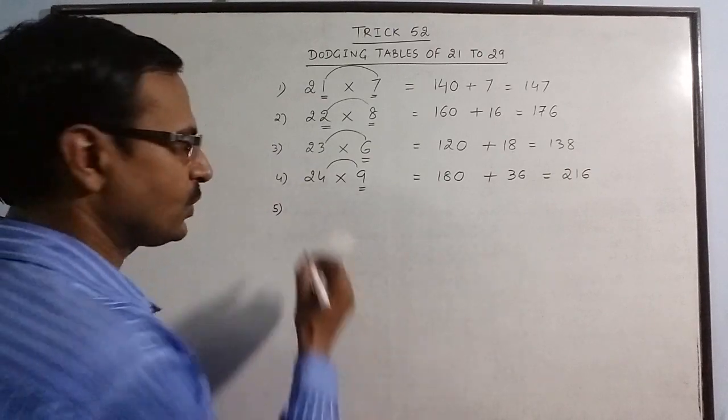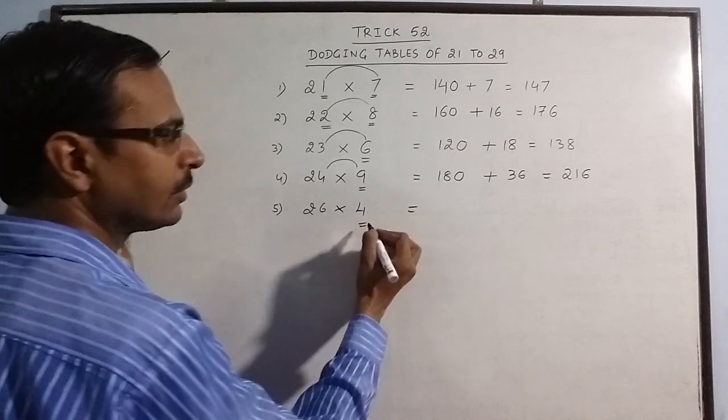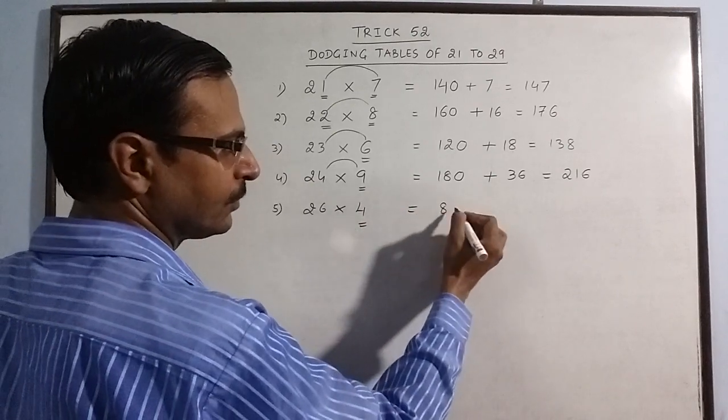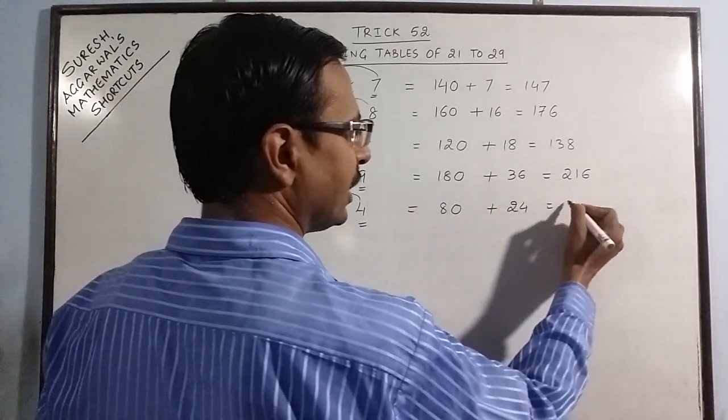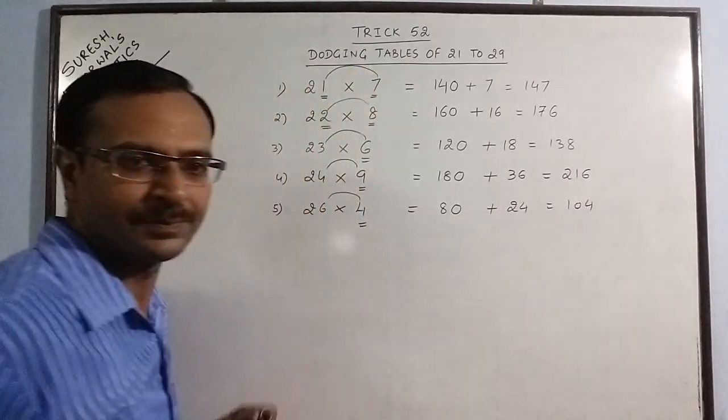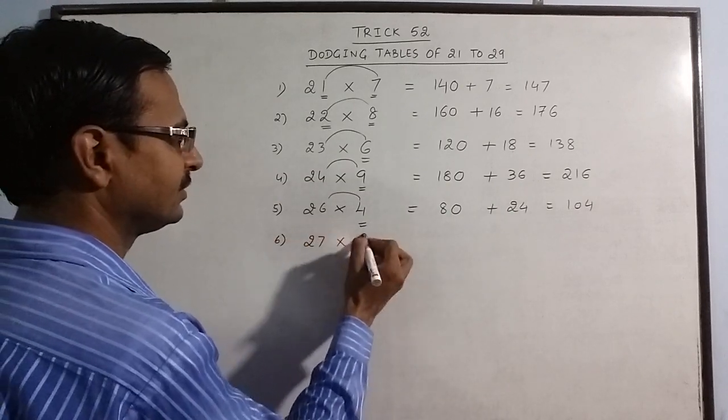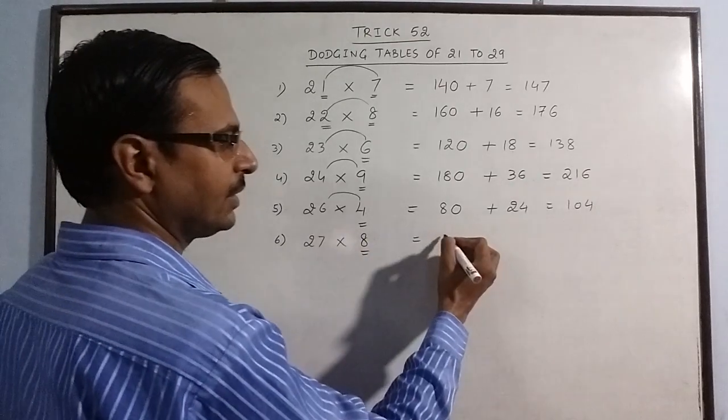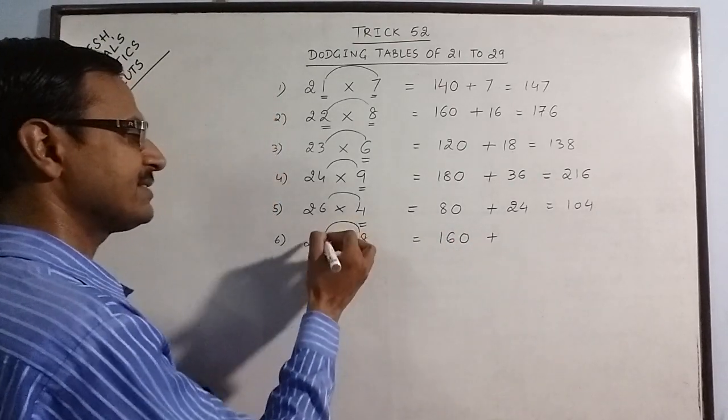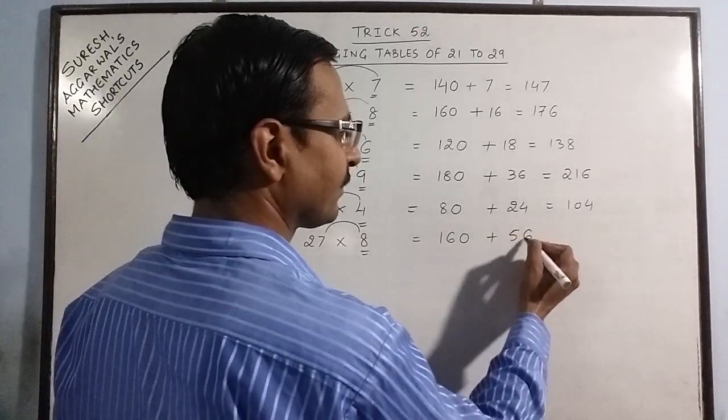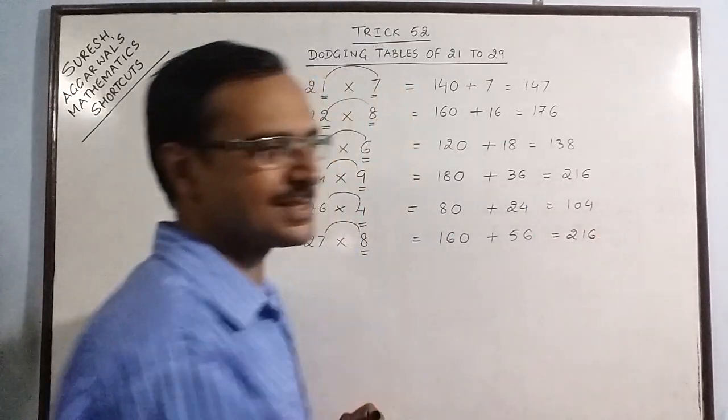Another example: 26 fours. Double of 4 is 8, put a 0, and 4 sixes are 24, giving 104. 27 eights: 8 twos are 16, put a 0, 8 sevens are 56. 160 plus 50 is 210, so 216 is the product.